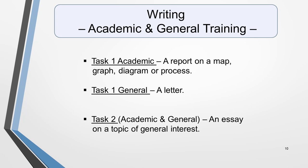Task 1 in the academic and general writing tests are different, but both are marked in the same way, using the same criteria. Task 1 academic is a report on a map, graph, diagram or process. Task 1 general involves writing a letter. Task 2 for both tests is to write an essay on a topic of general interest, although you can use a slightly more informal style in the general exam.